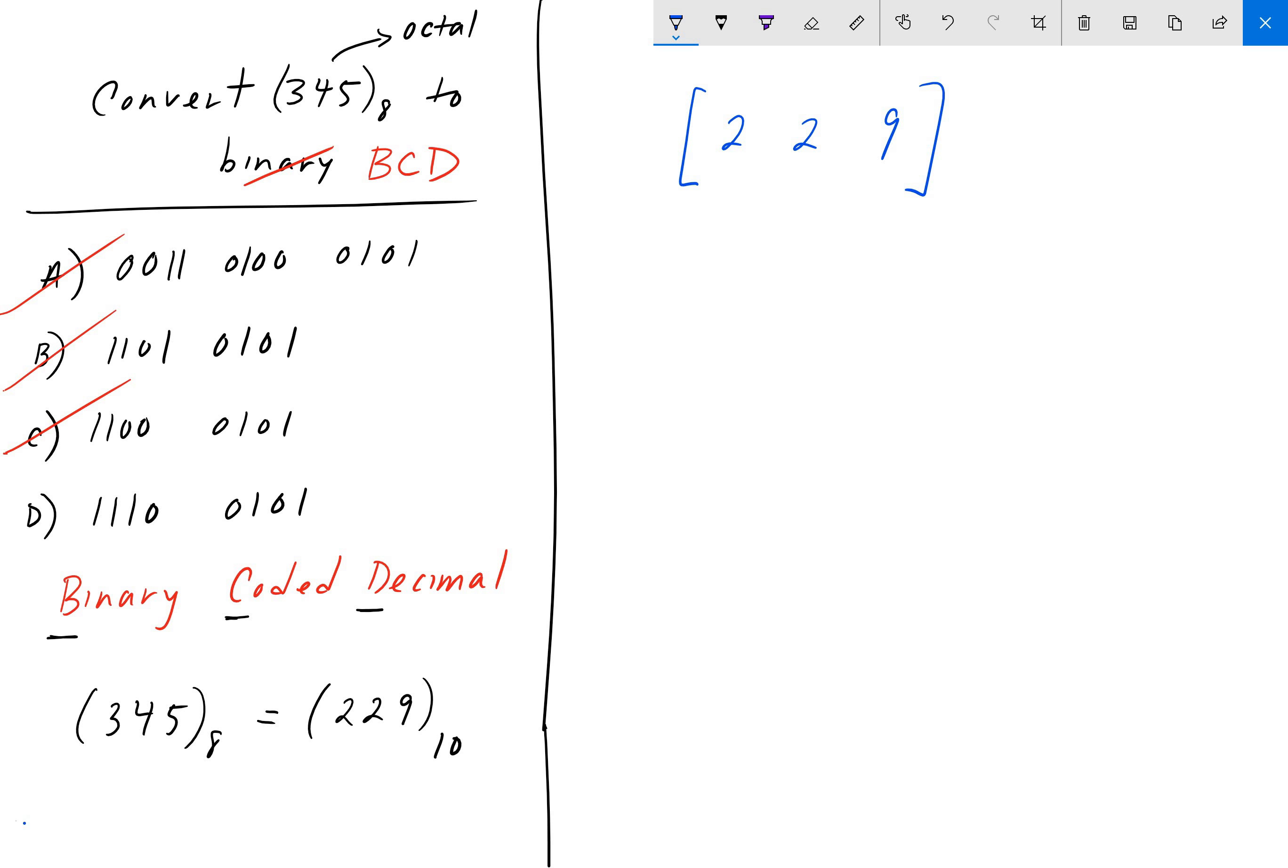In natural binary, we found the binary equivalent of 229 as just one long binary string. In BCD, we partition each digit and find the binary equivalent of each digit, then serialize those together.